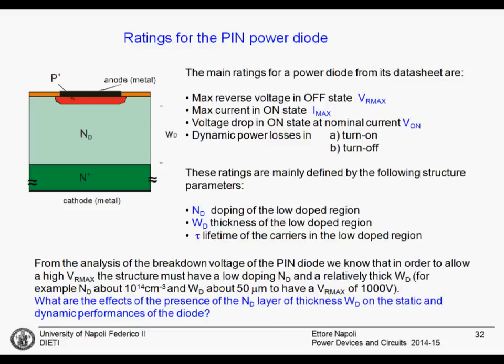Greetings for the PIN power diode. The most important parameters on the datasheet for the power diode are the maximum reverse voltage in the off state, Vrmax — the breakdown voltage — the maximum current it can carry in the on state, Imax, the voltage drop in the on state, Von, and very important: the dynamic power losses during turn-on and turn-off.